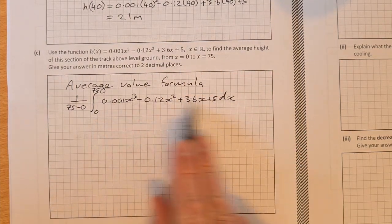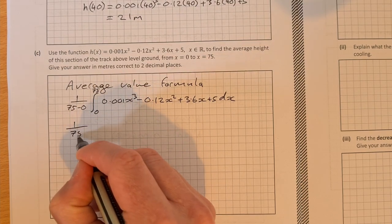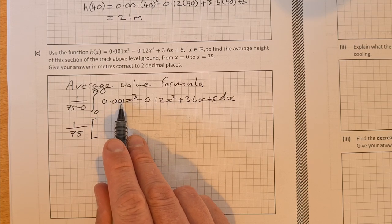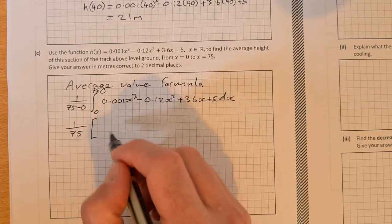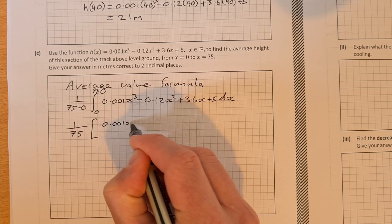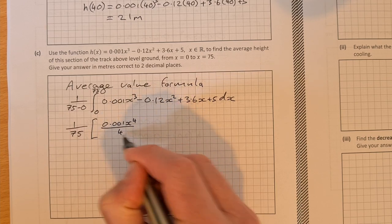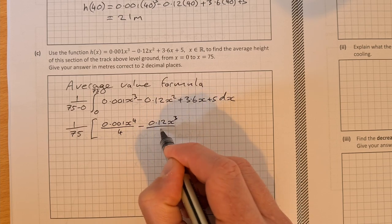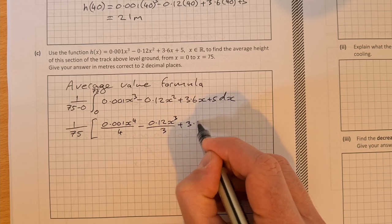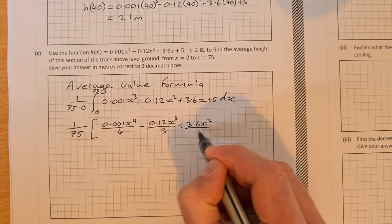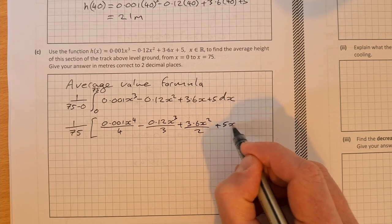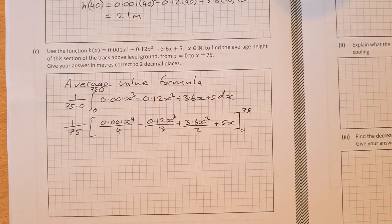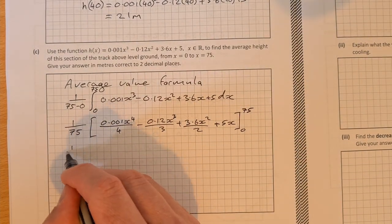So if we need to integrate this, so that's 1 over 75 times, integrate this, so it'll be 0.001x to the power of 4 over 4 minus 0.12x cubed over 3 plus 3.6x squared over 2 plus 5x. And that's evaluated between 0 and 75.